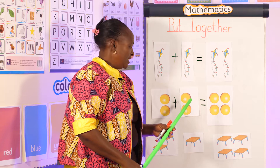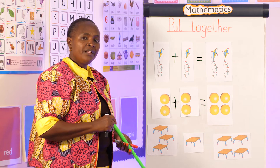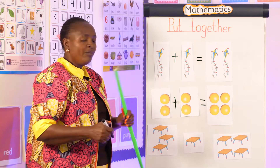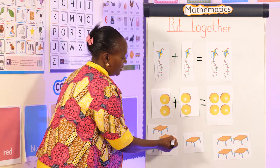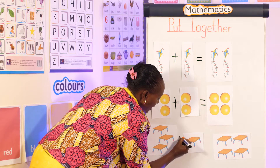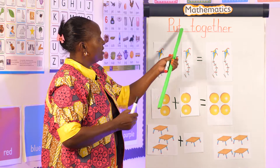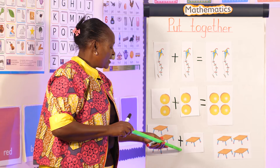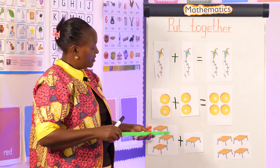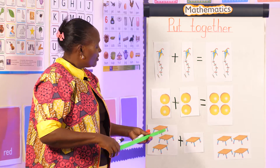Very well. Now what do I have here? We have tables! How many tables can you see? When we are putting together we use the plus sign — some of you will say it's a cross, but it is the plus sign in mathematics.